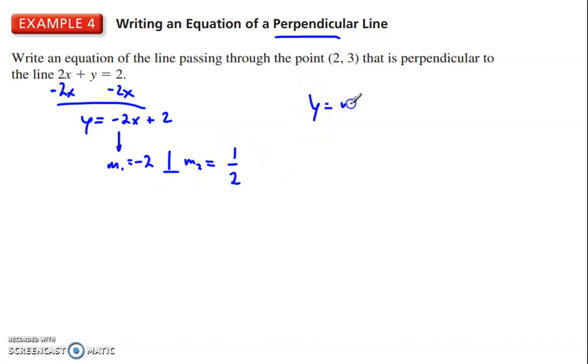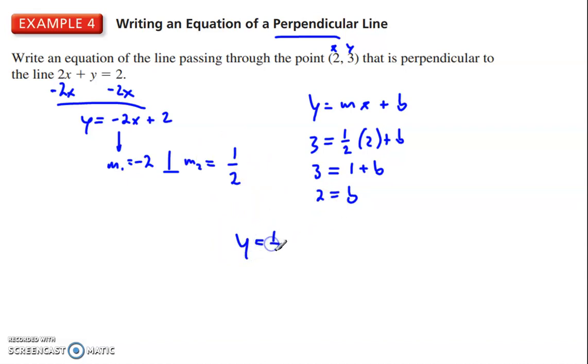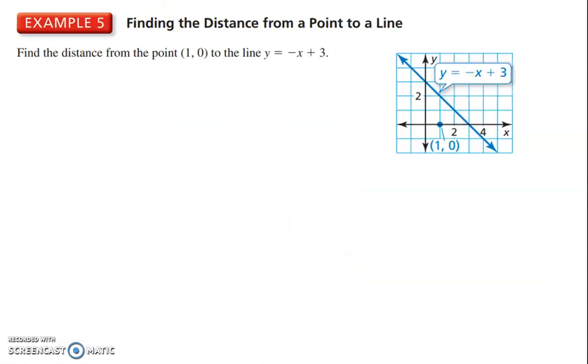All right. y equals Mx plus B. We're going to find B by plugging in x, y, and M. y is 3 equals 1 half of 2 plus B. Multiply, and that gives you 3 equals 1 plus B. Subtract 1. You get B equals 2. All right. And then we have M and B. So y equals 1 half x plus 2. Oh, that was sloppy. Anyways, moving on.